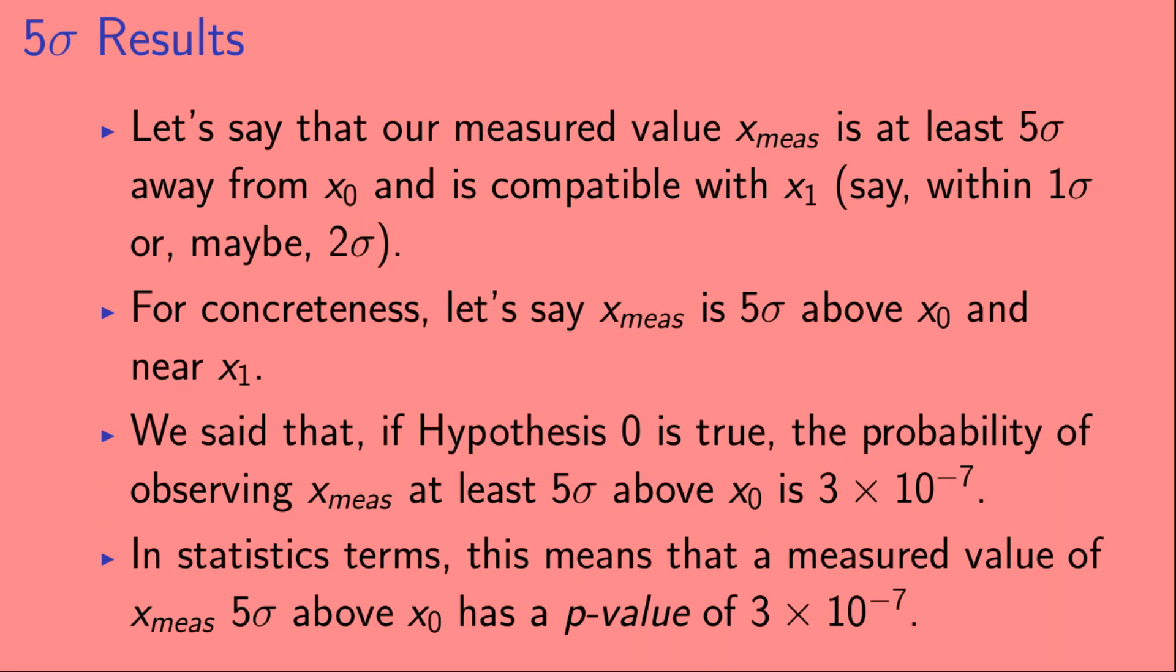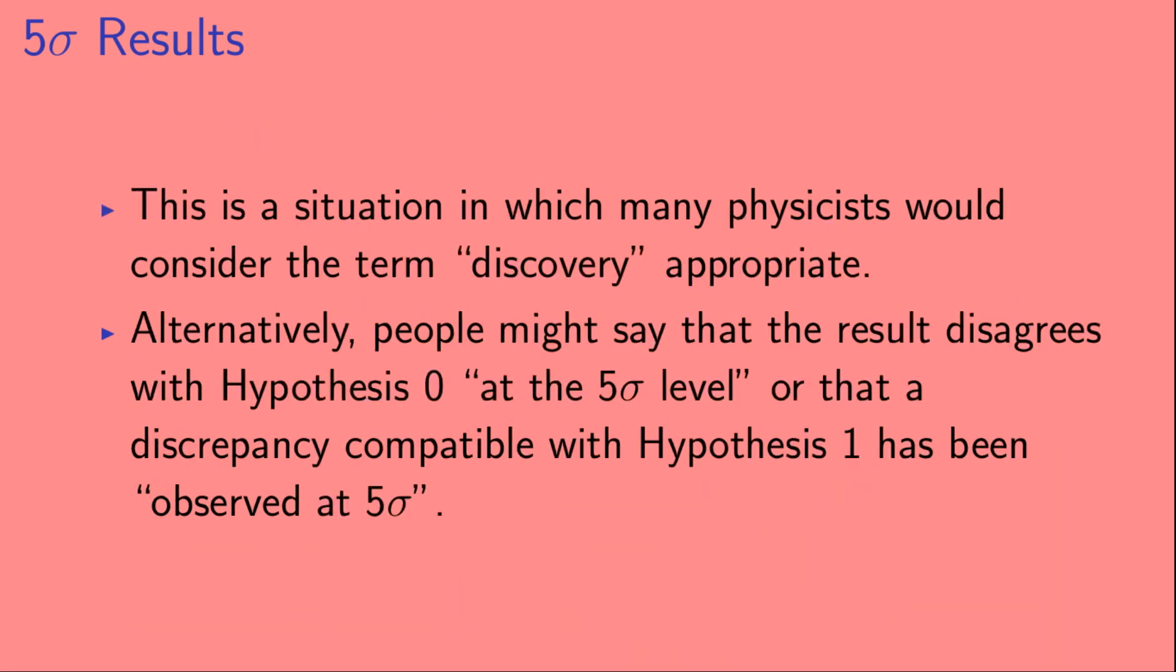We said that if hypothesis 0 is true, the probability of observing x_meas at least 5 sigma above x0 is 3 times 10 to the minus 7. In statistics terms, this means that a measured value of x_meas, 5 sigma above x0, has a p-value of 3 times 10 to the minus 7. This is a situation in which many physicists would consider the term discovery appropriate. Alternatively, people might say that the result disagrees with hypothesis 0 at the 5 sigma level, or that a discrepancy compatible with hypothesis 1 has been observed at 5 sigma.